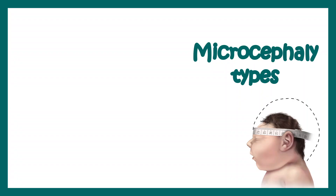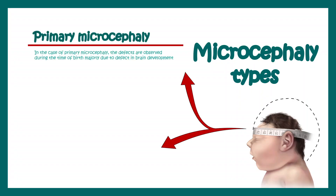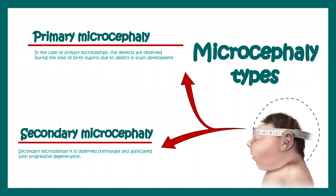Microcephaly can be divided into two categories. One is primary microcephaly, where the defects are observed during the development of the fetus inside the mother's womb. In case of secondary microcephaly, the symptoms occur postnatally — that means after birth — and it occurs in a progressive fashion, leading to progressive degeneration and reduction in head size.